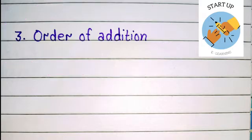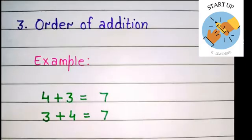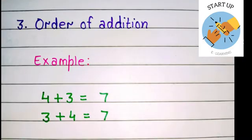Let's see this example: if we add 4 plus 3, or we change the order and make it 3 plus 4, their answer will remain the same. 4 plus 3 is equal to 7, or we can say 3 plus 4 is equal to 7. So we have seen that when we were adding these numbers and we changed the order, their sum will remain the same.